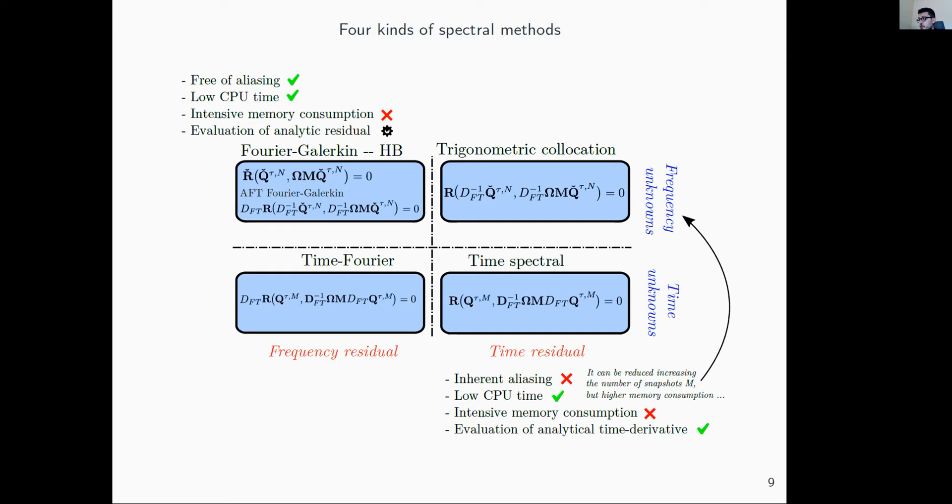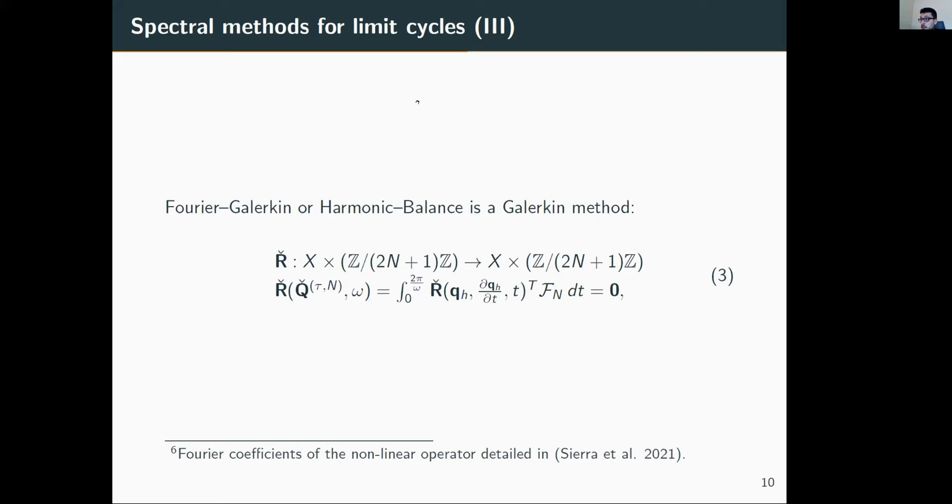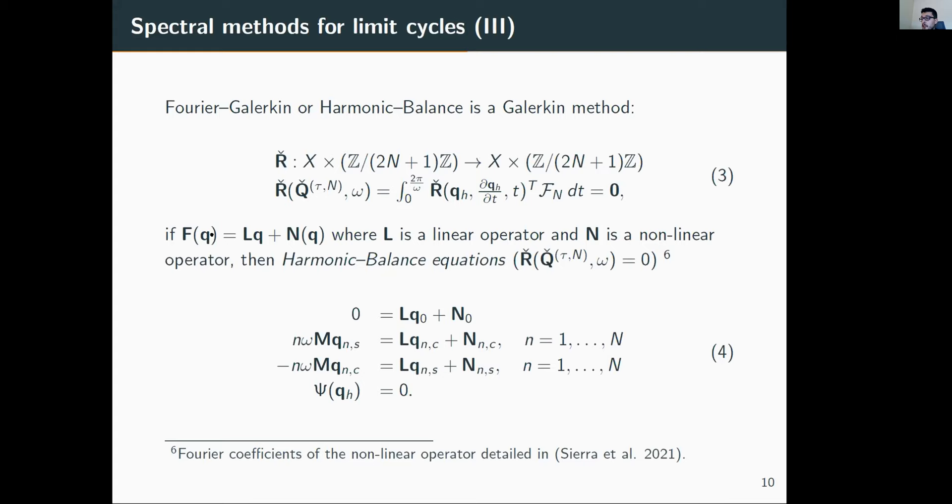As I was saying, the Galerkin harmonic balance—also called the Fourier-Galerkin method—is a Galerkin approach, meaning the residual is evaluated in a Galerkin manner. We have the residuals and take the inner product with the Fourier basis.